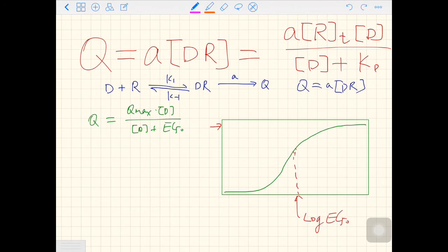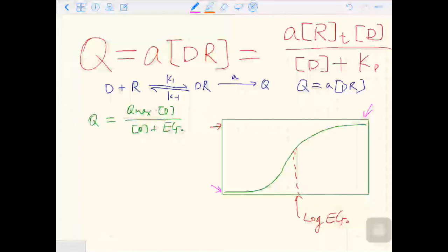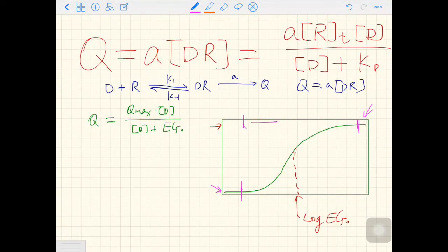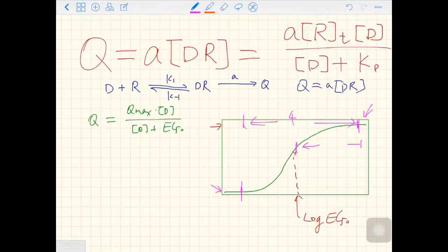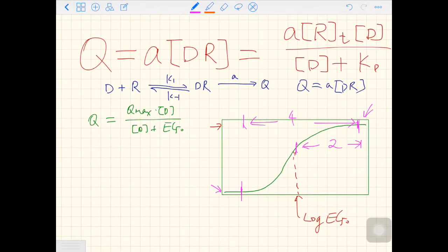From the minimum response to the maximum response, this rectangular hyperbola should span over about four log units on the x-axis. So here to here should have four log units, which means here to here should have two log units.